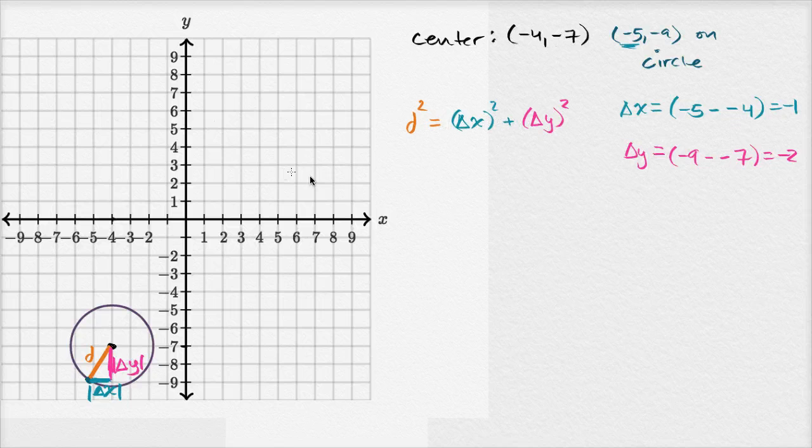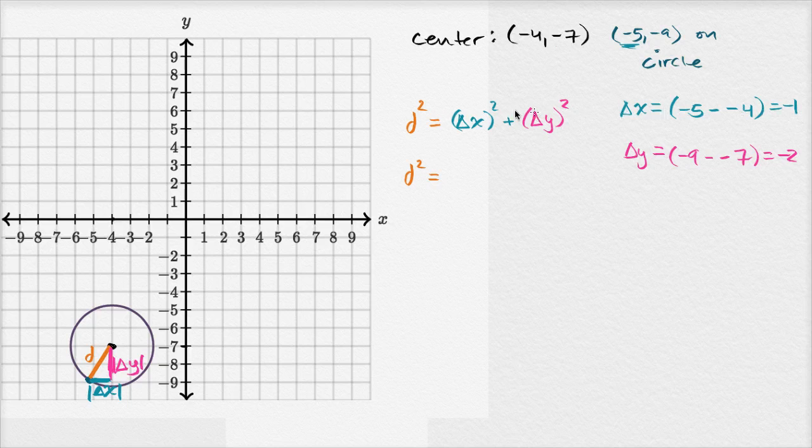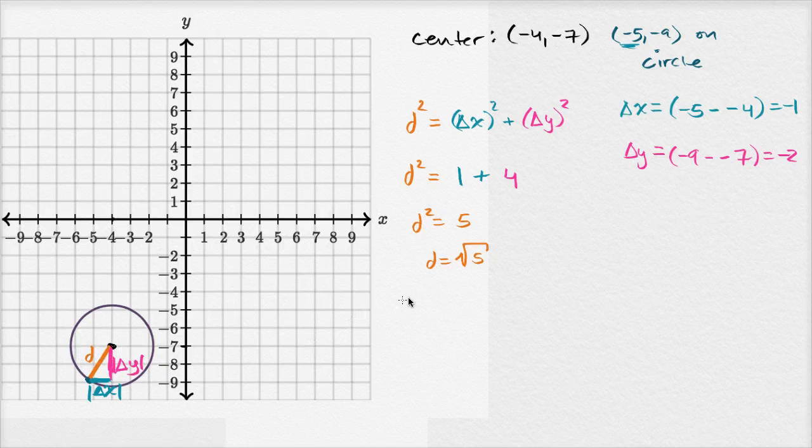So our distance squared, I could really call this the radius squared, is going to be equal to our change in x squared. Well it's negative one squared, which is just one, plus our change in y squared. Negative two squared is just positive four. One plus four. And so you have your distance squared is equal to five, or the distance is equal to the square root of five. So we could say the radius is equal to the square root of five. And we're done.